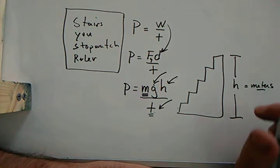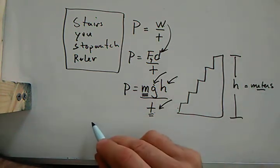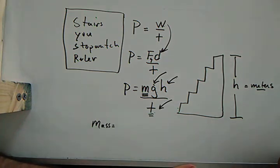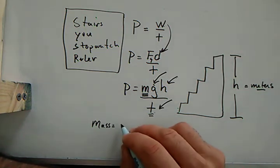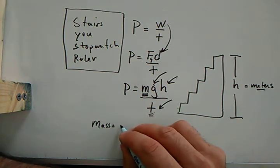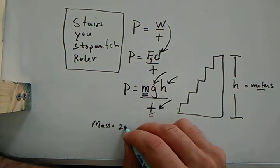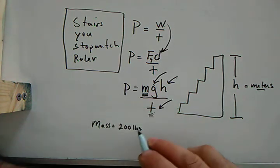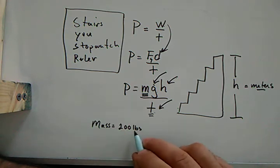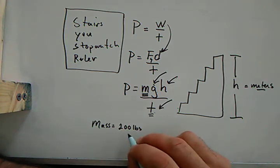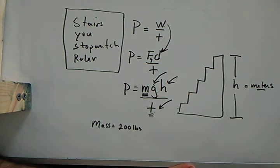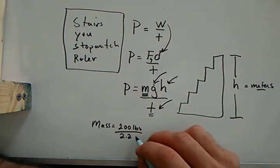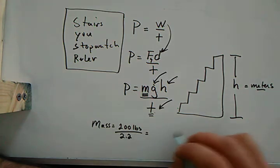Now the only issue is finding our mass. Everyone has different masses, but what I will tell you is that to get your mass in kilograms, it's a very simple conversion. Let's pretend that I weigh 200 pounds. Okay, and I want to find mass. Now this is not mass, this is pounds.